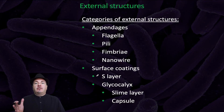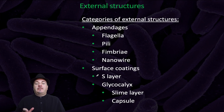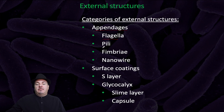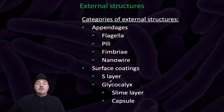In regards to the external structures the bacteria can have, we have different categories. We have appendages, which include the flagella, pili, fimbriae, and nanowires. And then we have the surface coatings, which include the S layer and the glycocalyx, which is the slime layer or the capsule.